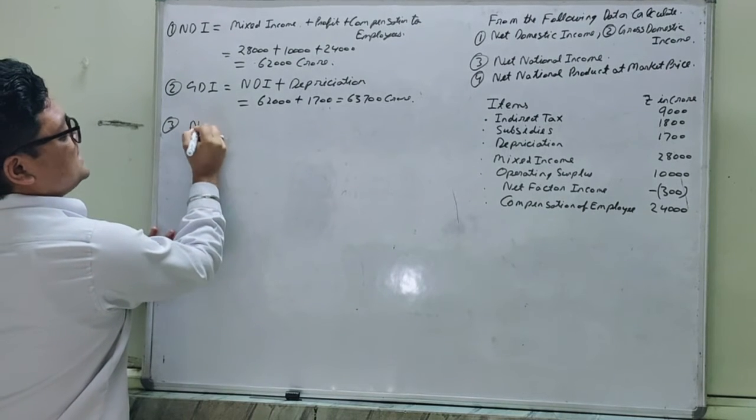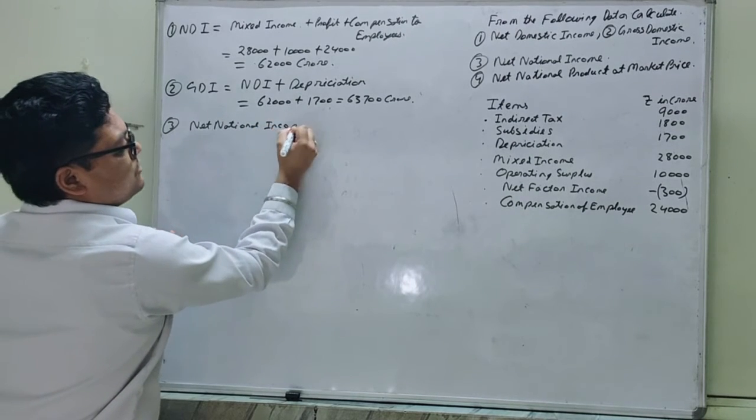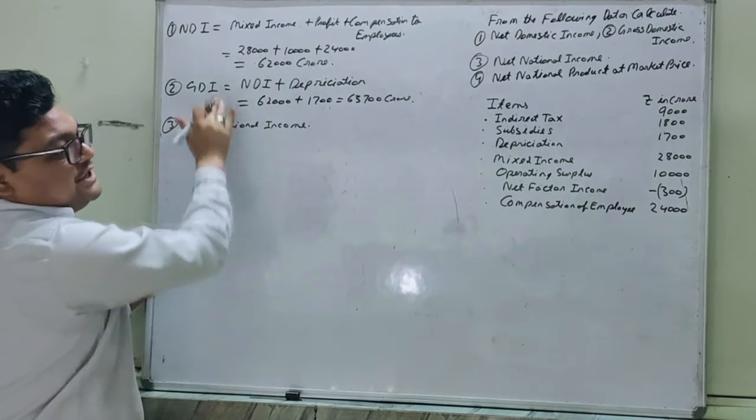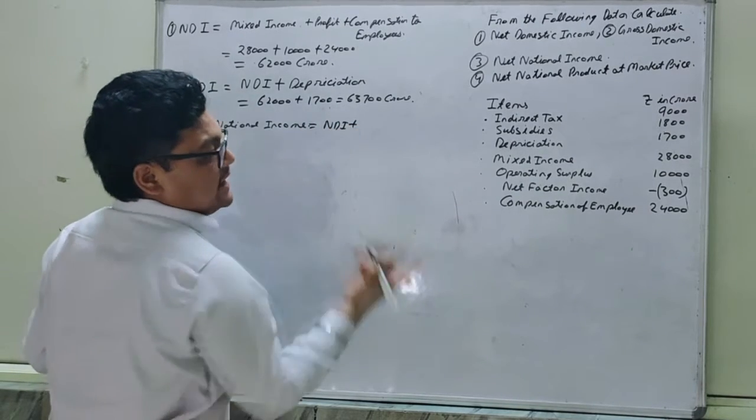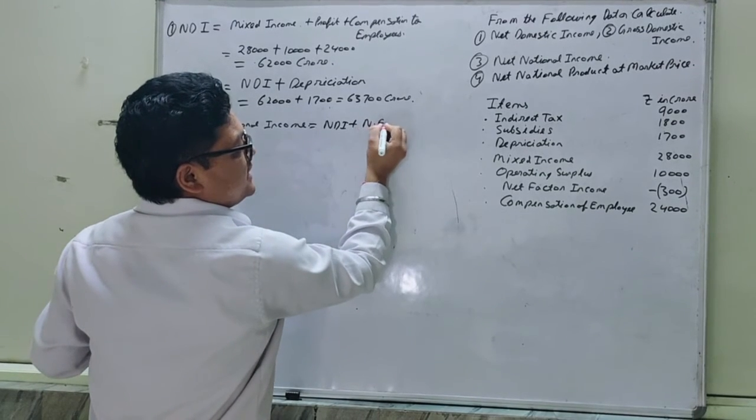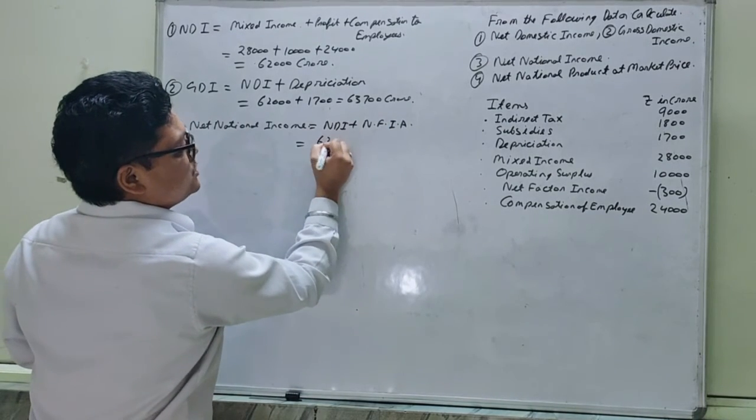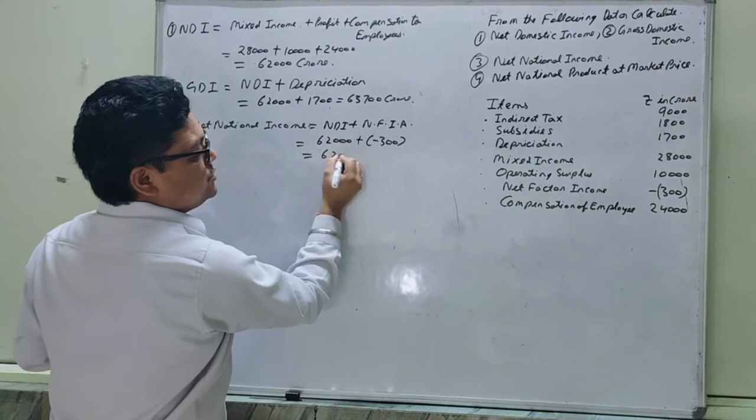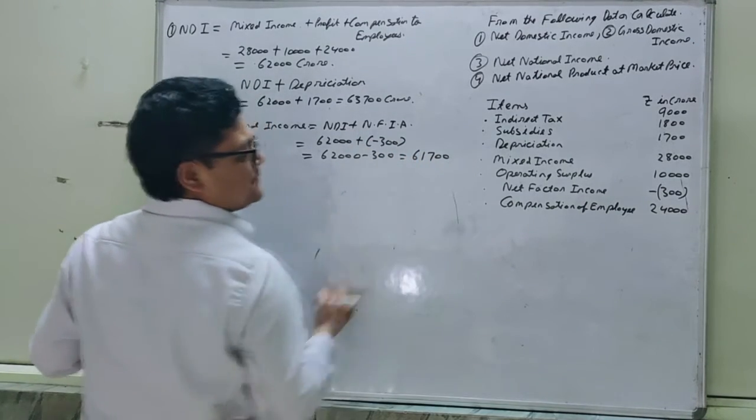Next is net national income. Net means we take net income. So NDI plus, as you know, national income always includes net factor income from abroad. So NDI is 62,000 plus net factor income minus 300, which becomes 61,700 crore.